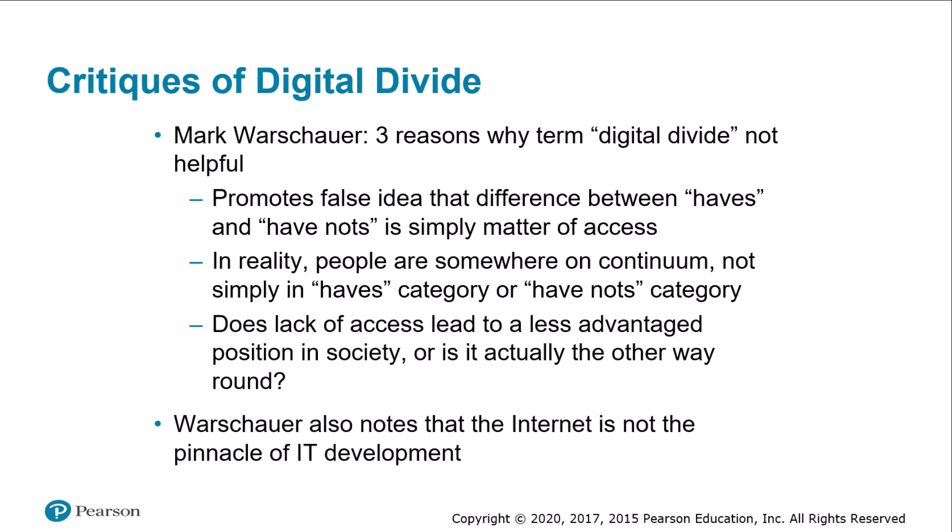Warshower's second criticism is that the term implies everyone is on one side or another — a binary of haves and have-nots. In reality, access is a continuum and each individual occupies a particular place on it. For example, someone with a 56K modem has online access but cannot retrieve the same wealth of material as someone with a broadband connection.